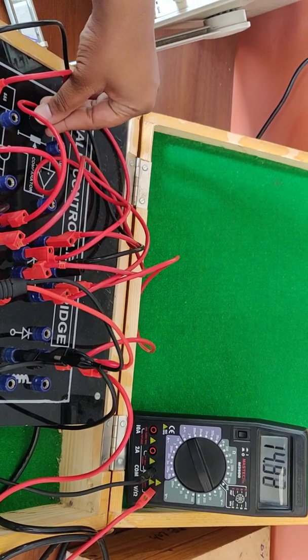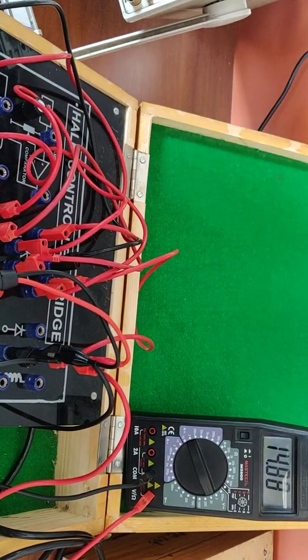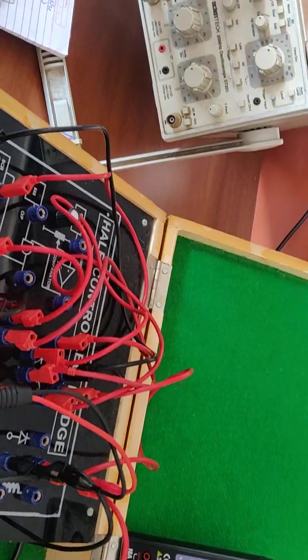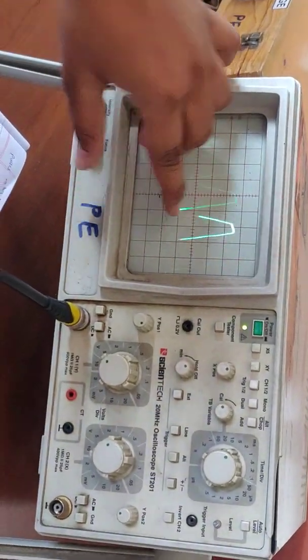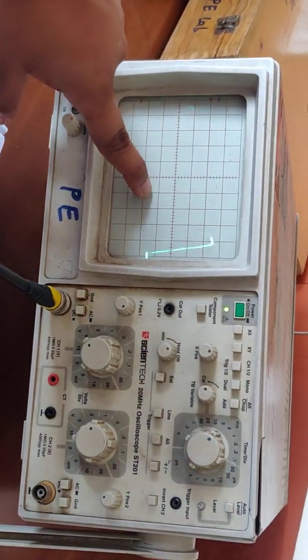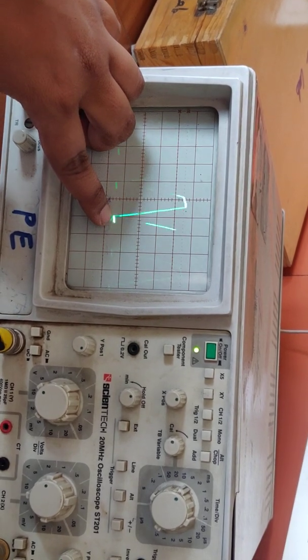The voltage accordingly changes whenever we are changing the alpha. When the alpha is increased the voltage level decreases. As you can see the drop in the voltage as we are increasing the alpha. Now in the CRO there is a line in the below side. This is the non-conducting period.